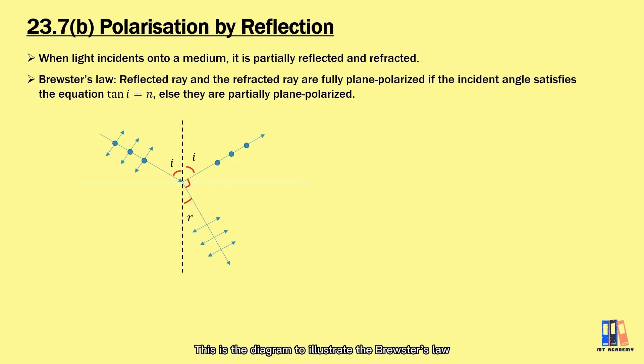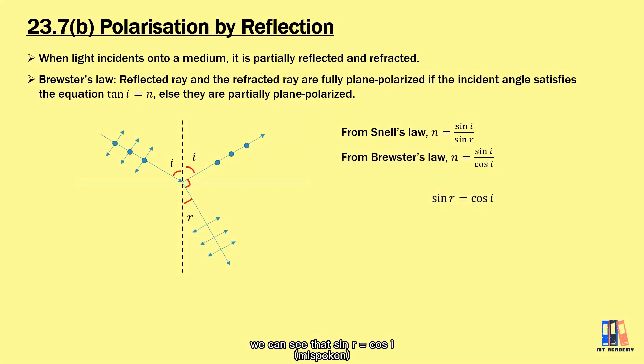This is the diagram to illustrate Brewster's law. From Snell's law, n is equal to sin i over sin r. Combined with Brewster's law, we can see that sin i is equal to cos r, which is the corresponding angle that i plus r is 90 degrees. So you can observe both the reflected and refracted rays are perpendicular to each other when they are fully plane polarized.